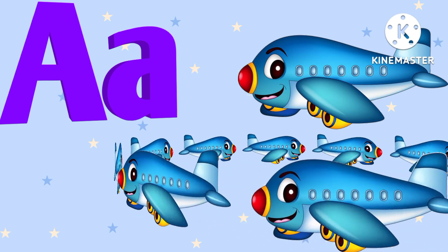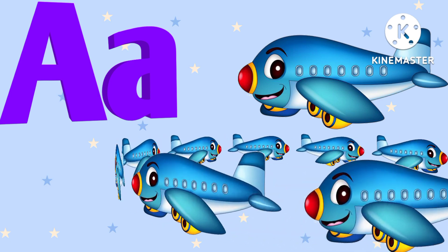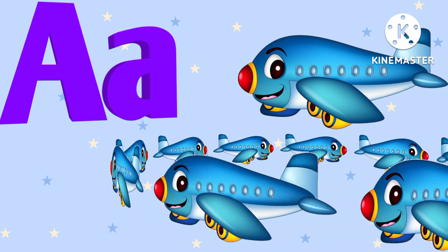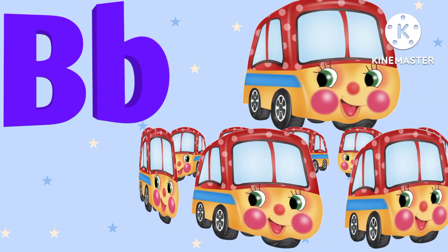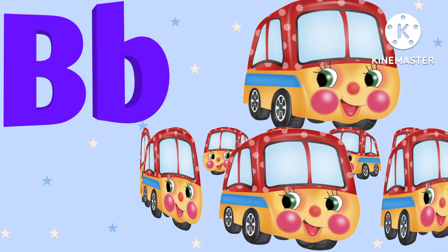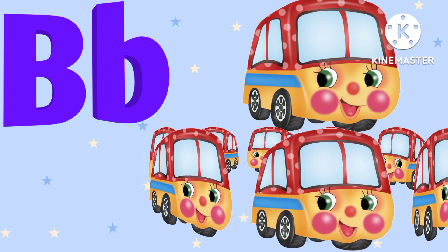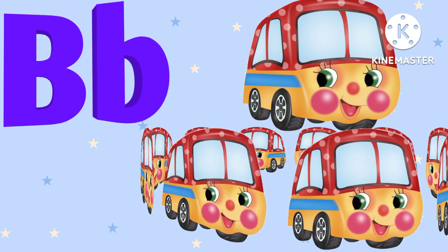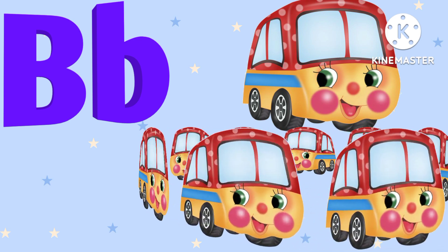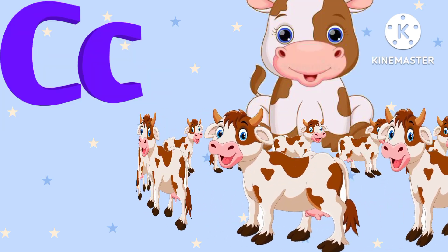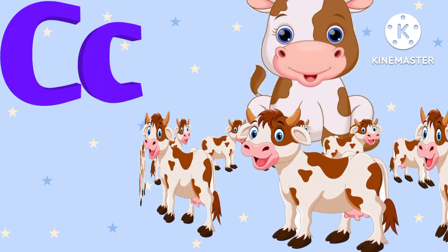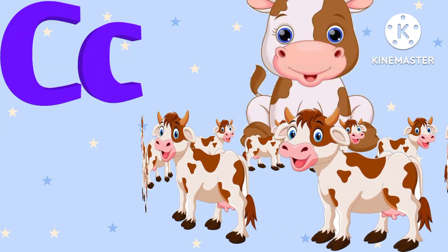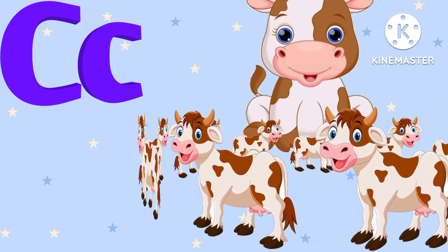A is for airplane. A. Airplane. B is for bird. B. Bird. C is for cow. C. Cow.